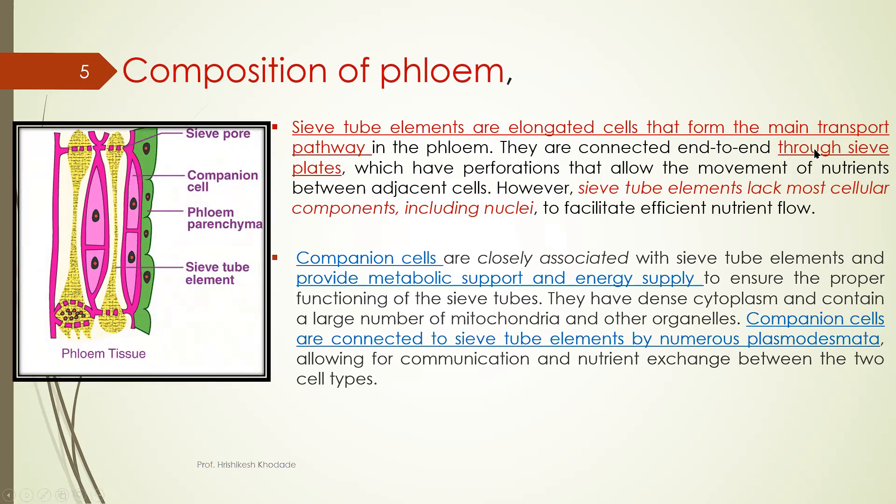So they are connected end to end through sieve plates. Here you can see sieve plate. Sieve plate consists of sieve pores which have perforation. Perforation means holes that allows the movement of nutrient between adjacent cells.